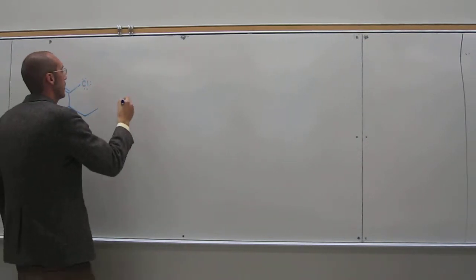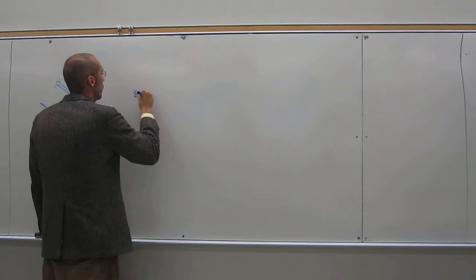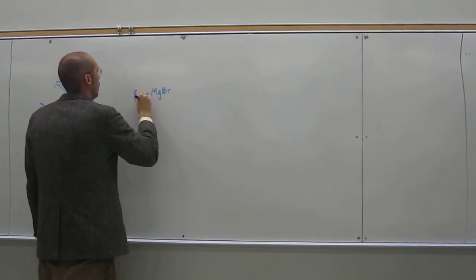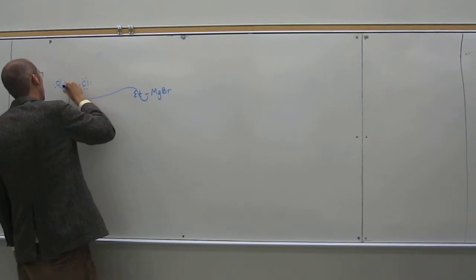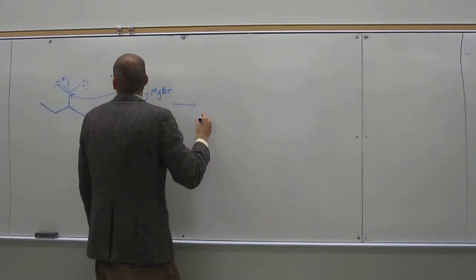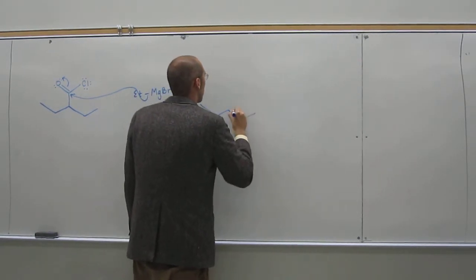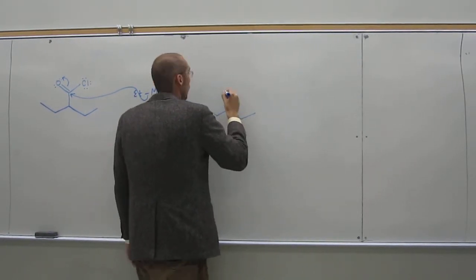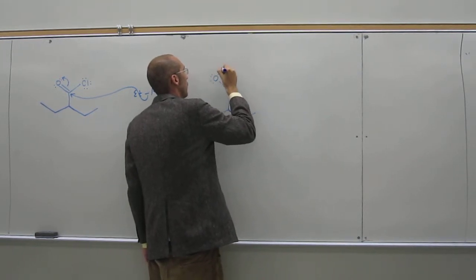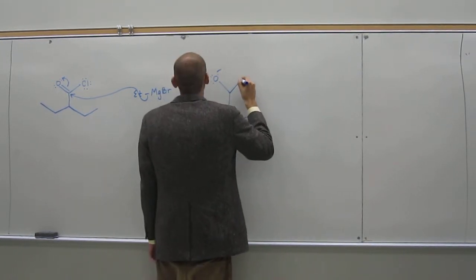Okay, so like we said, ethyl magnesium bromide. I like to put the arrow through the ET. And in this case, since we're going to further react it, I'm going to actually put, instead of just the abbreviation for ethyl, the actual ethyl group.